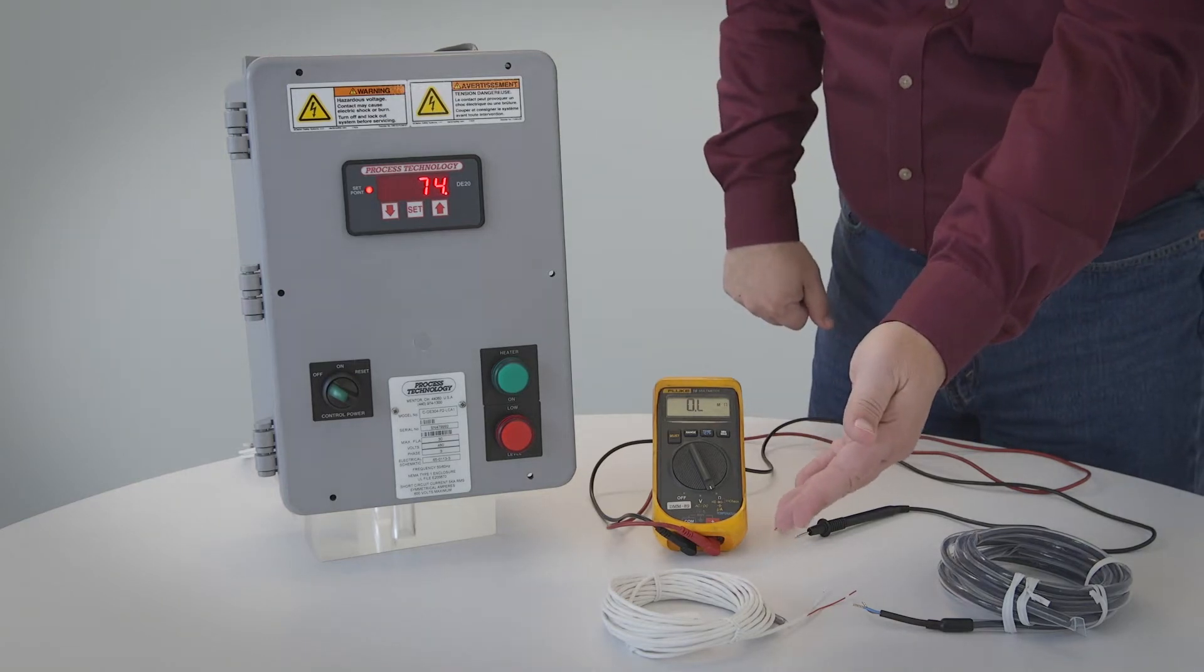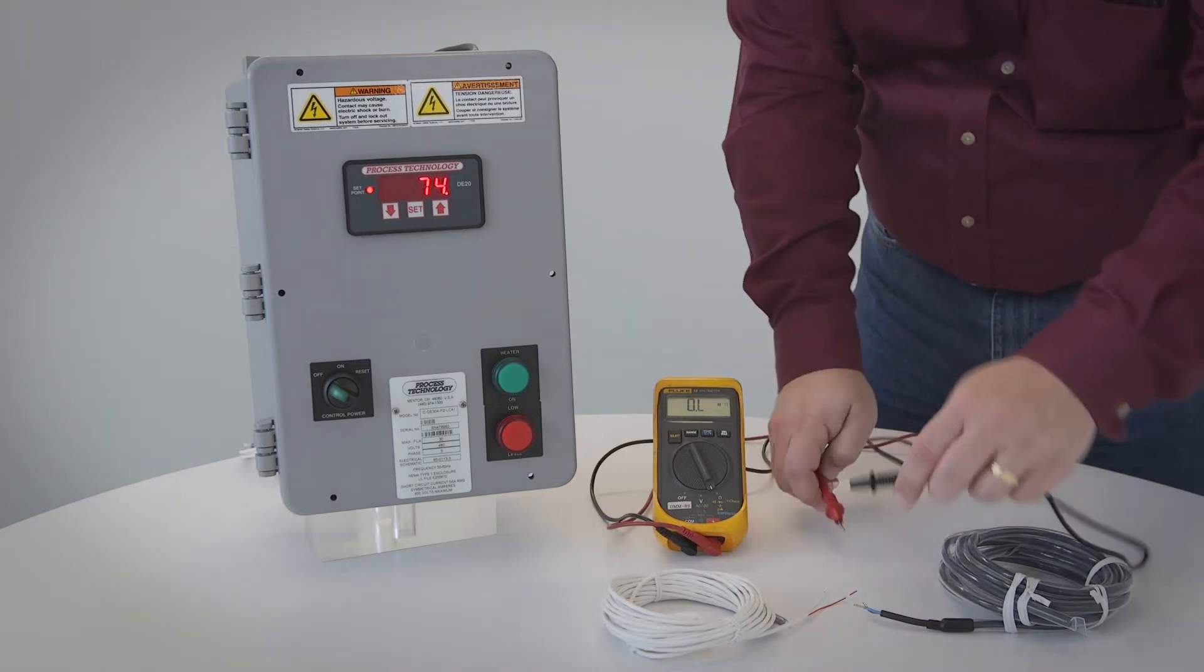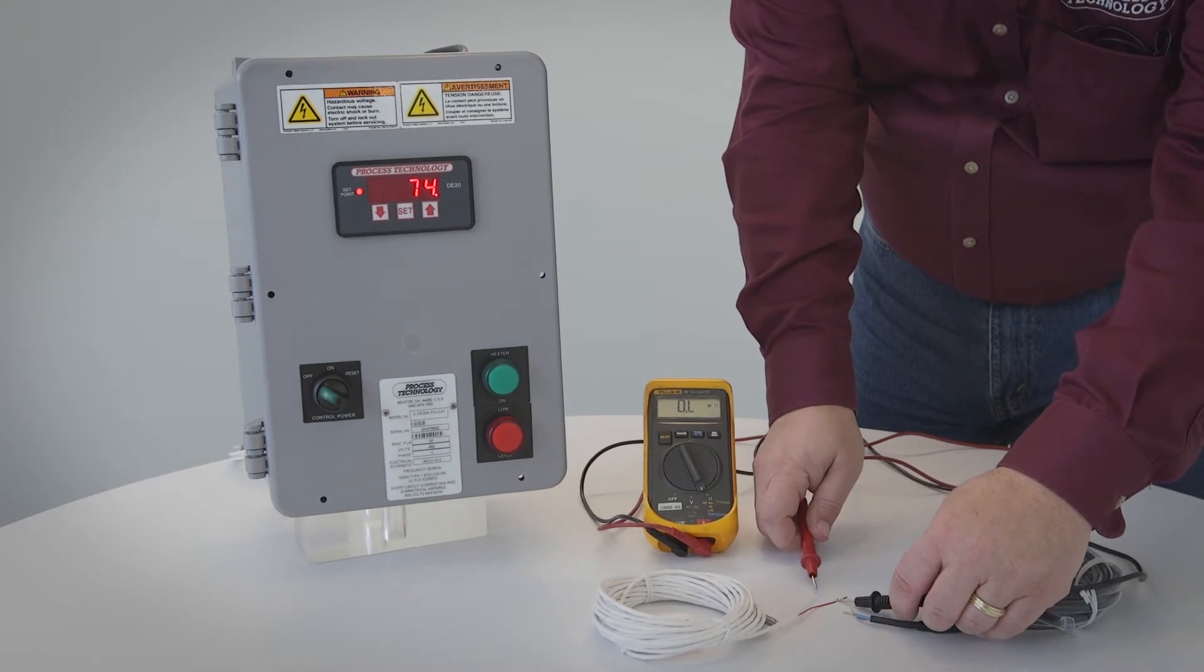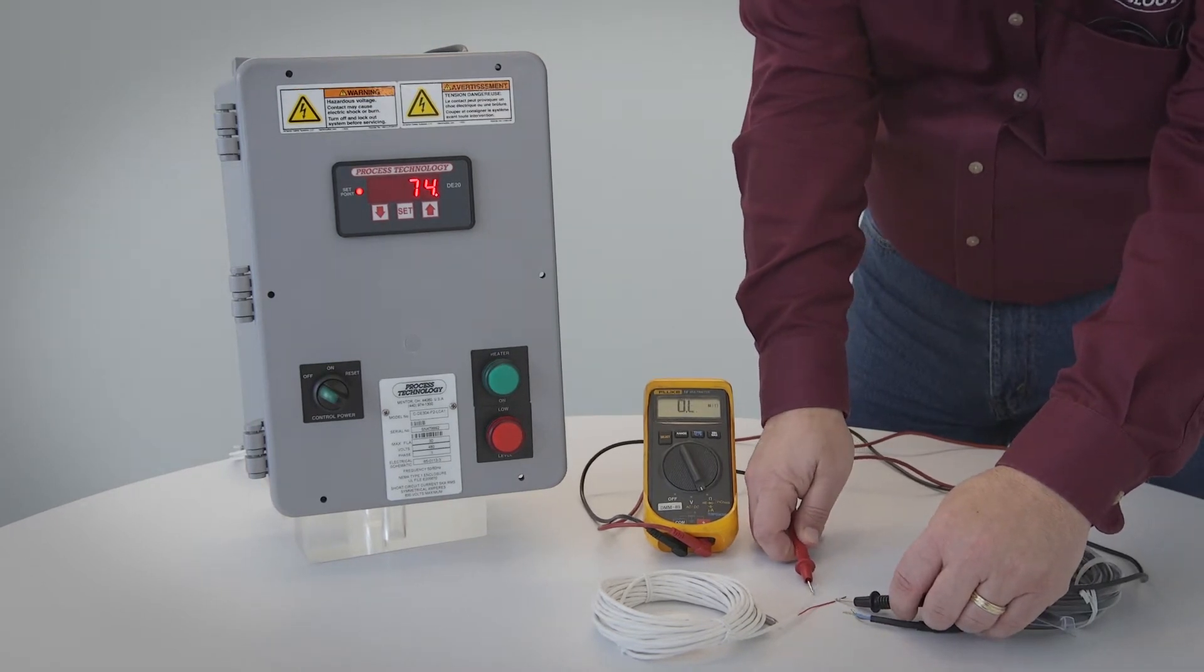The standard temperature sensor is a 1,000 ohm RTD. This sensor should measure somewhere around 1,090 ohms at room temperature.